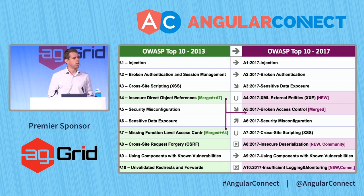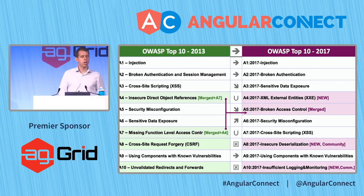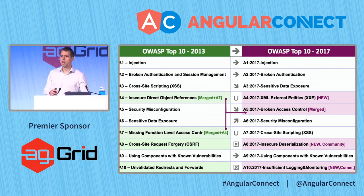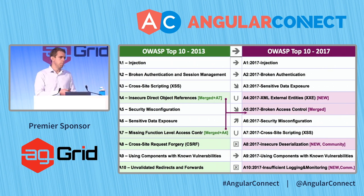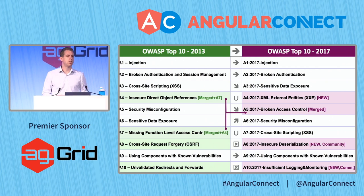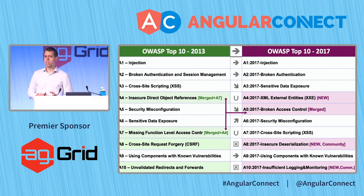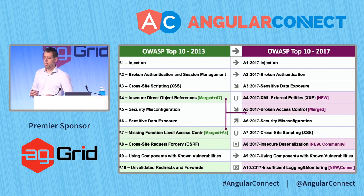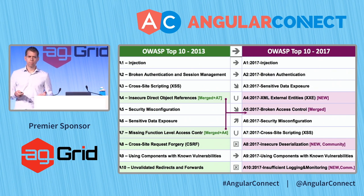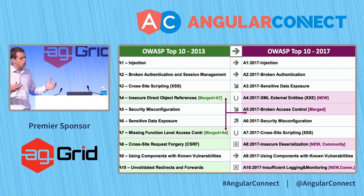They have a new version every couple of years. Every couple of years, they build a new list of what they observe in real applications — these problems are there. They look at the impact of the problems, how prevalent they are, and how easy it is to exploit them. Based on that, they create a list. You can see the 2017 version right here on the screen. This is the OWASP Top 10.